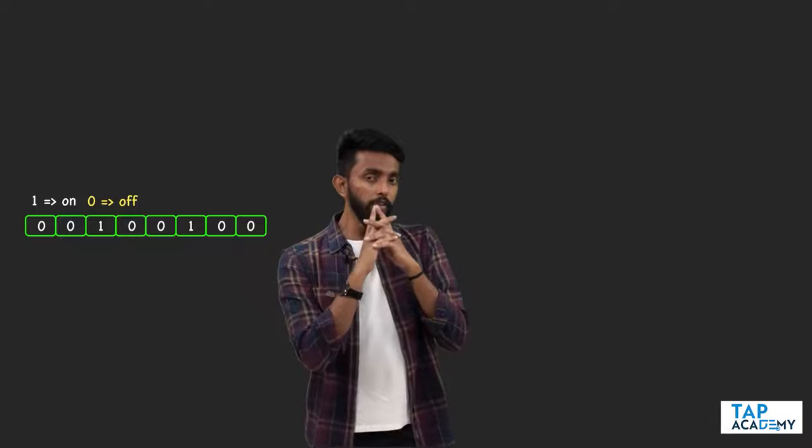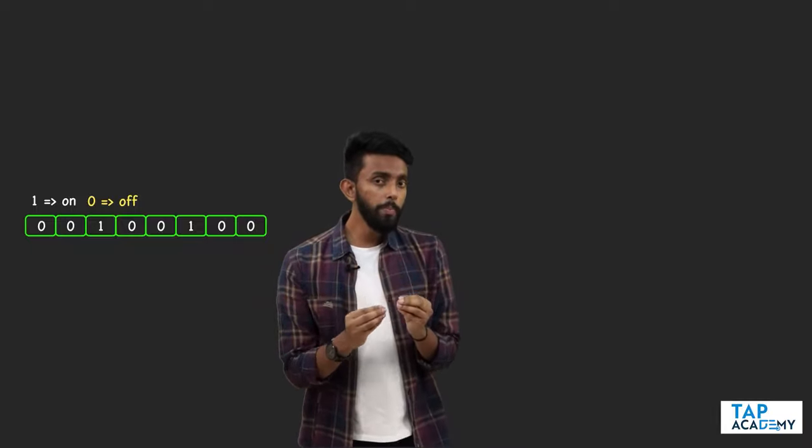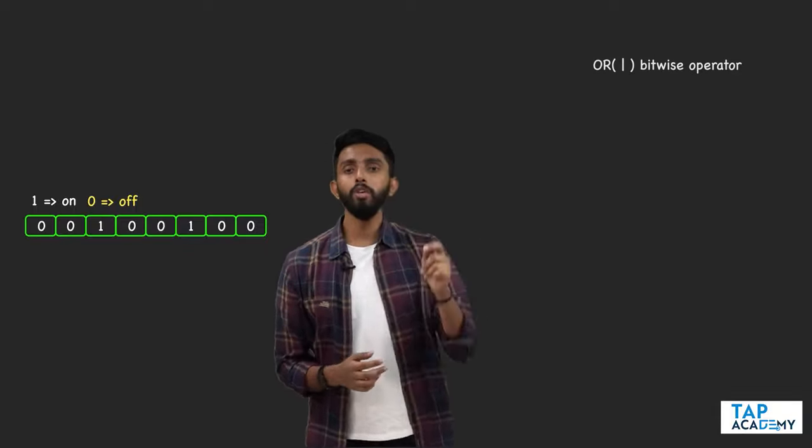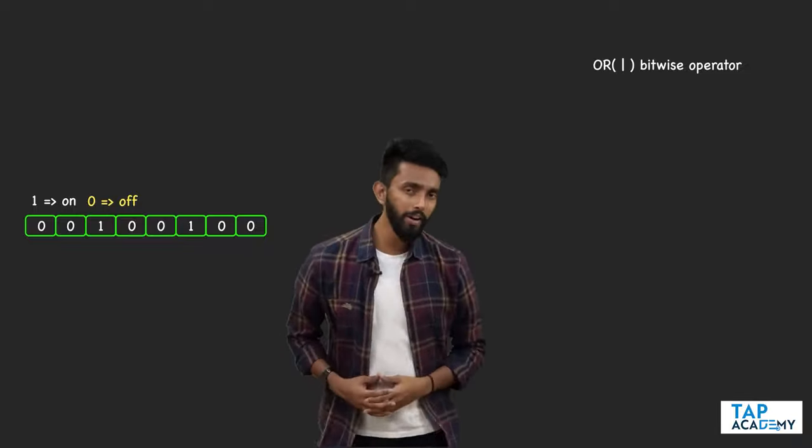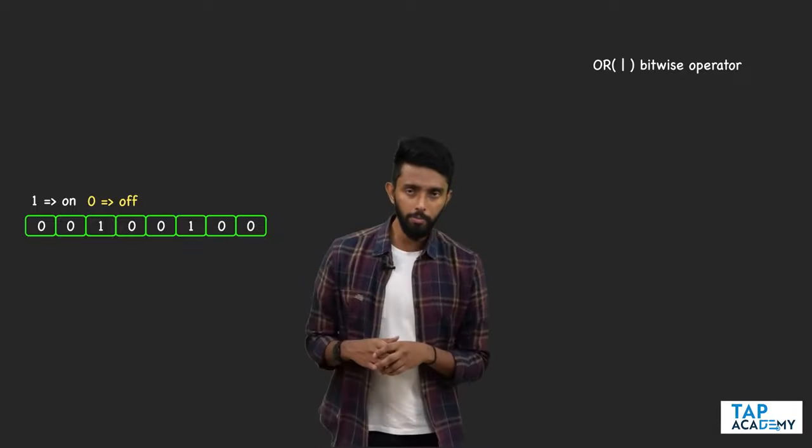If you want to switch a bit which is off and make it on, you must make use of the OR bitwise operator. The OR bitwise operator is always used to switch on bits. Now you must be wondering how — let me show you.